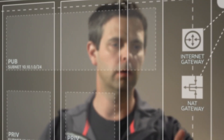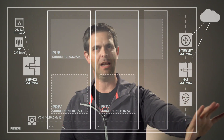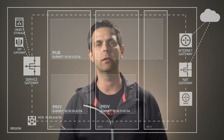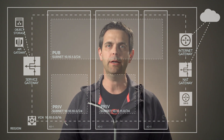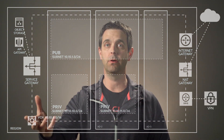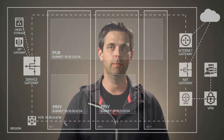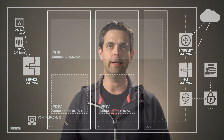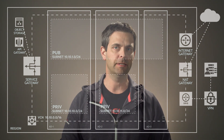Last but not least is our dynamic routing gateway. The dynamic routing gateway here is going to allow us to connect to external networks or remote networks. This could be an on-premises network that we connect to over VPN or FastConnect.